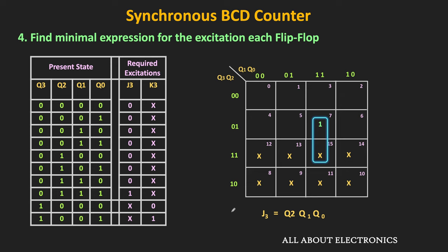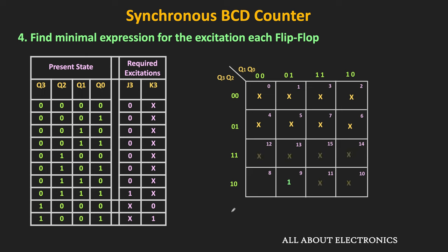For K3: it equals 1 for only 1 input combination, with 8 don't care terms from the excitation table plus 6 more unused states (1010 to 1111). Mapping these in the K-map, we can make a group of 8 using the don't care terms. This group corresponds to Q0, so K3 = Q0. In this way, we get the minimal expressions for J3 and K3.